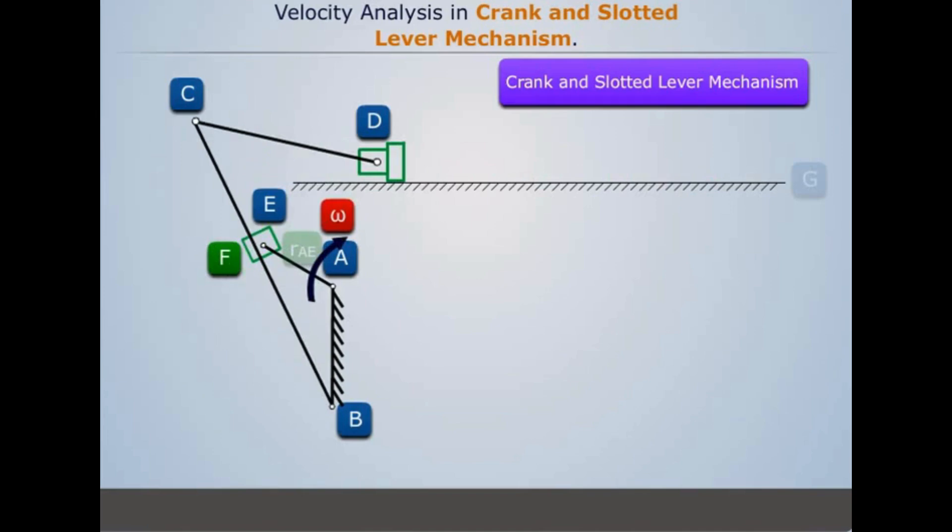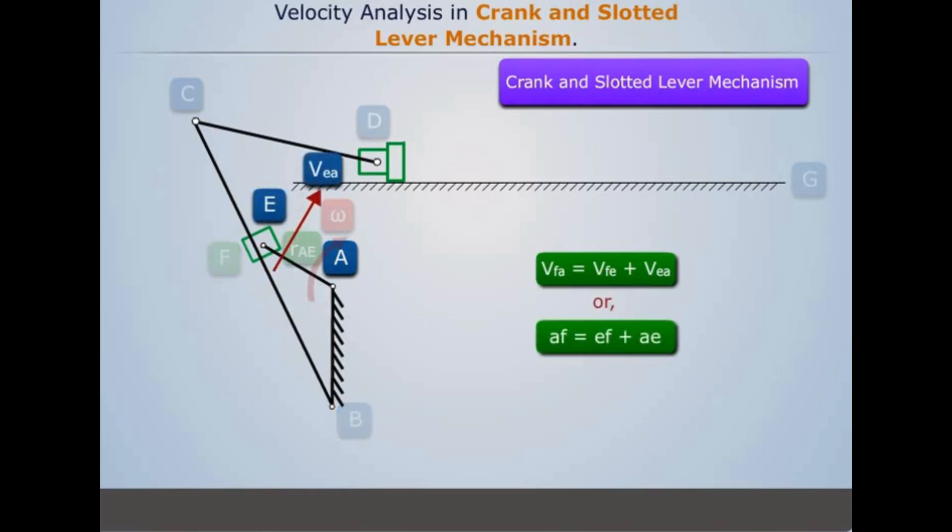Before drawing the velocity diagram, let's write the velocity vector equation between links which are connected directly. The velocity VEA is in the direction perpendicular to link EA. The magnitude of VEA can be calculated using the formula.